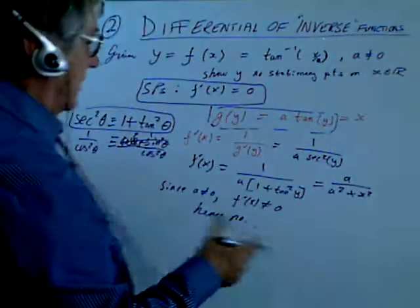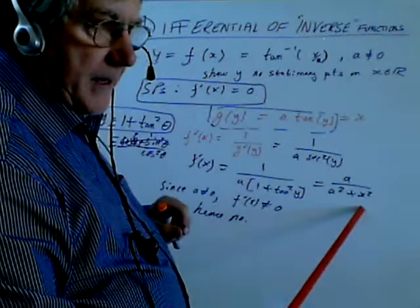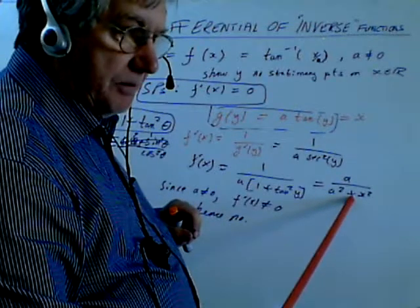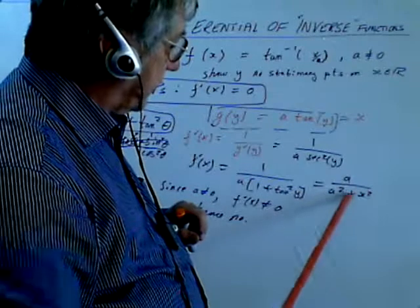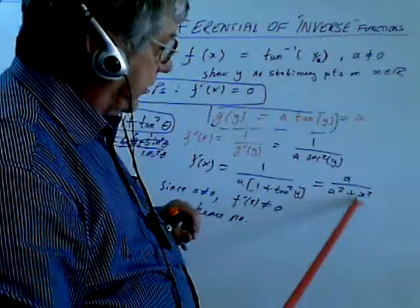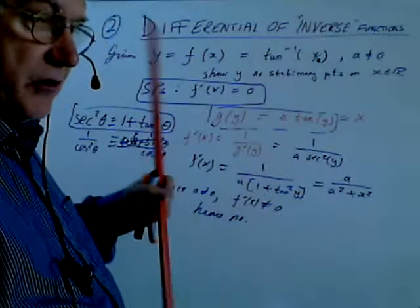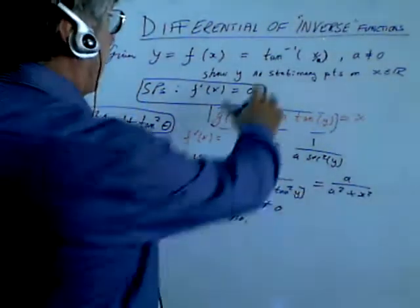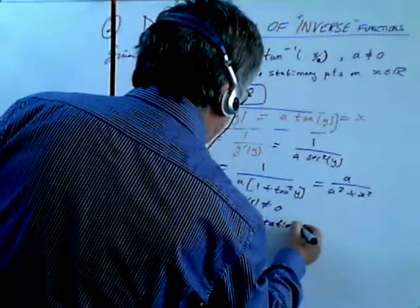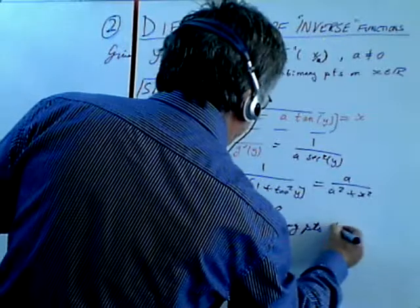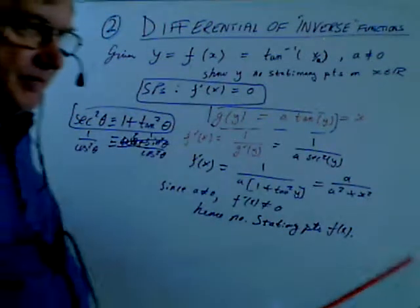Well, there could be. In fact, there isn't, because this denominator is never 0. Because a is not equal to 0, it doesn't matter what x² is. So this denominator is never equal to 0. So not only is there no stationary points, there's no critical points. Anyway, the question is about stationary points. So there's no stationary points for f(x). And that's the answer to the question.